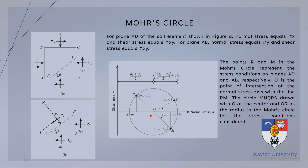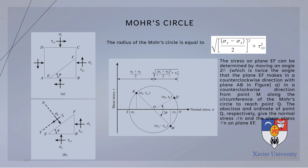The circle has center O and radius OR (or OM). The radius of the Mohr's Circle can be calculated using the given equation, or it can be read directly from the normal stress axis. The distance from the center O to the origin can also be computed using the equation.